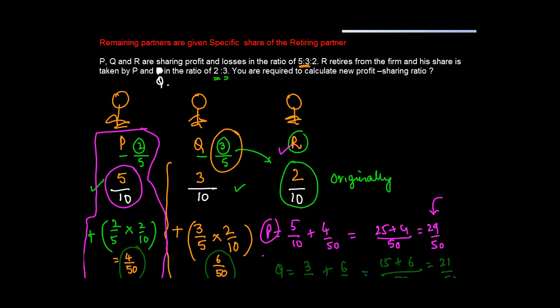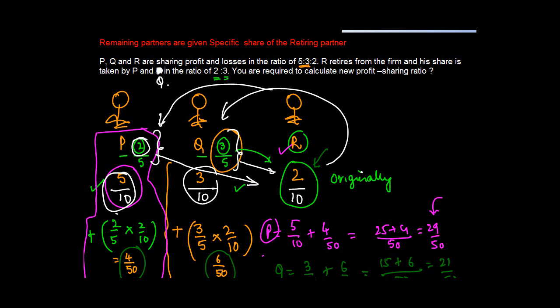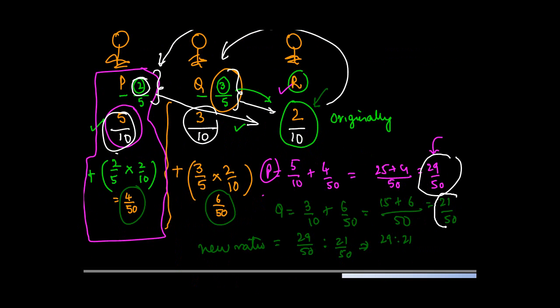So how did we find out the new ratio in this case? We knew one partner moved out, so whatever is his share gets divided between the remaining partners. We know how much the remaining partners are getting. They are getting in the ratio of 2:3, or in other words, 2/5 goes to P, 3/5 goes to Q. We calculate how much is 2/5 of his share, 3/5 of this share, and add it to the original numbers for P and Q. Once we do that, we get their new profit sharing. When we compare these two, we get the new ratio.